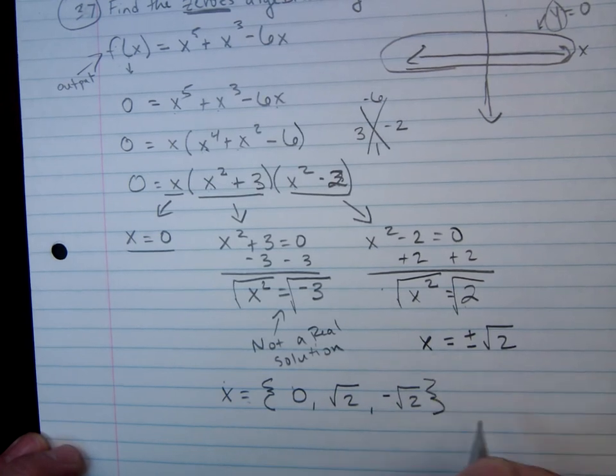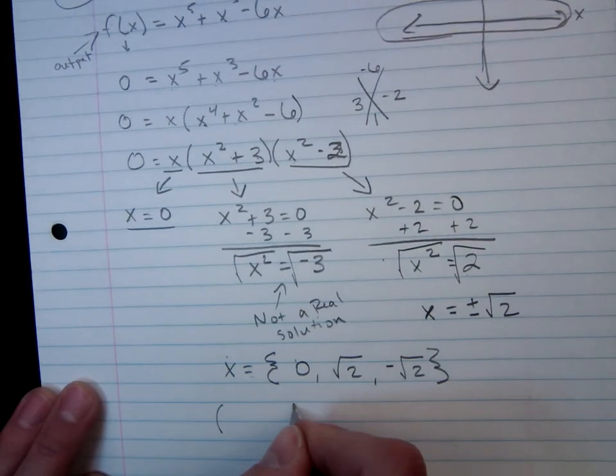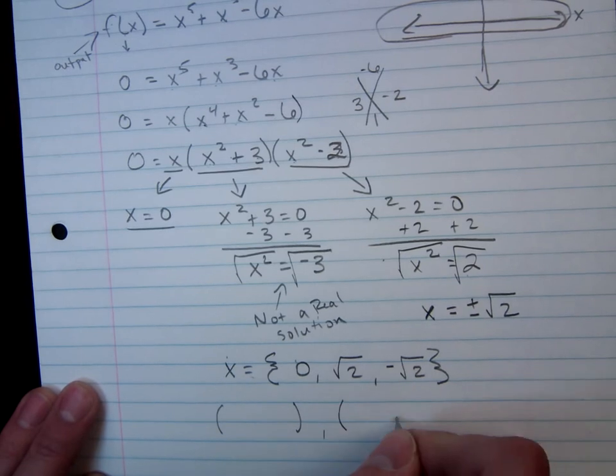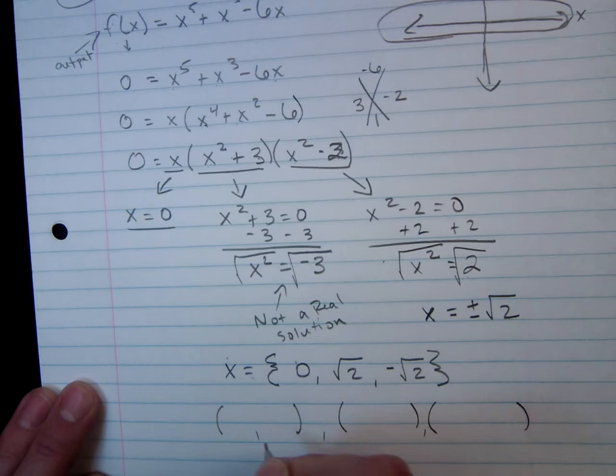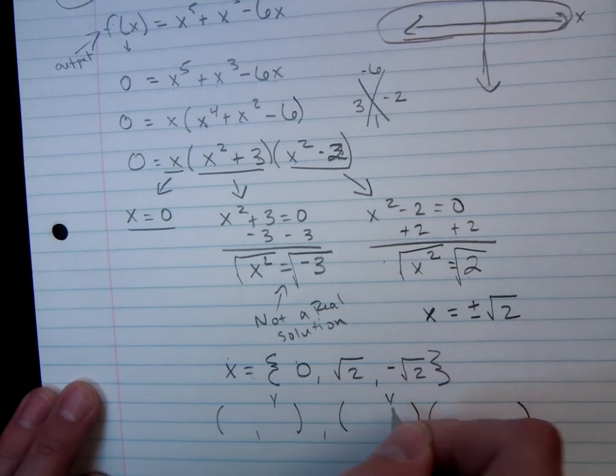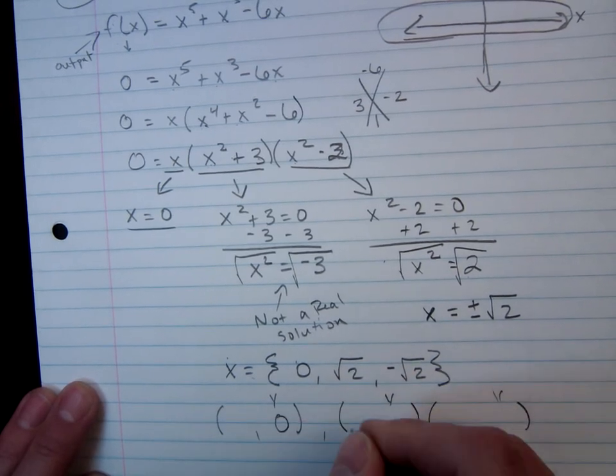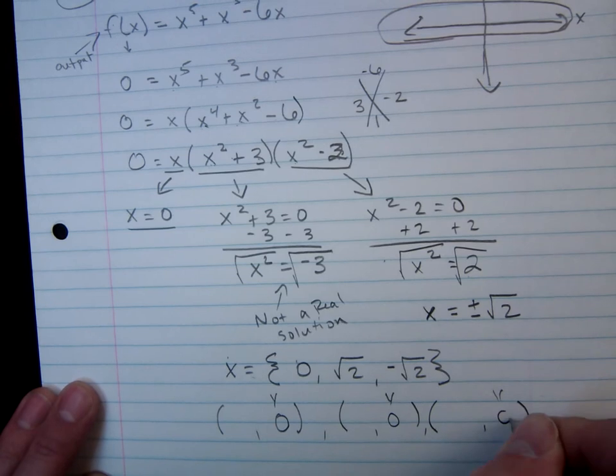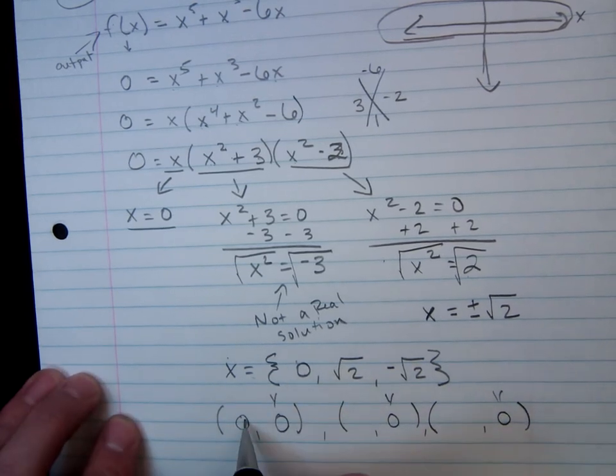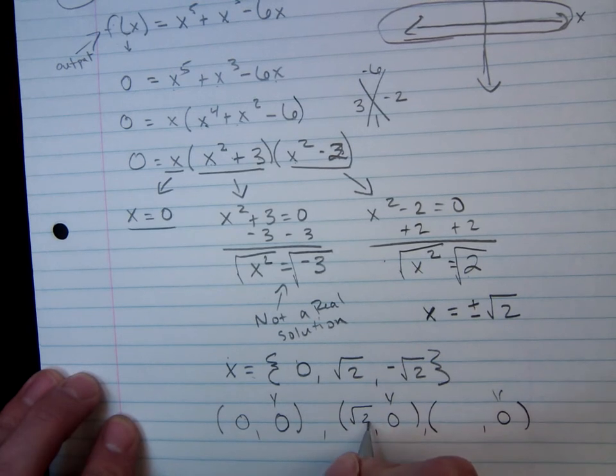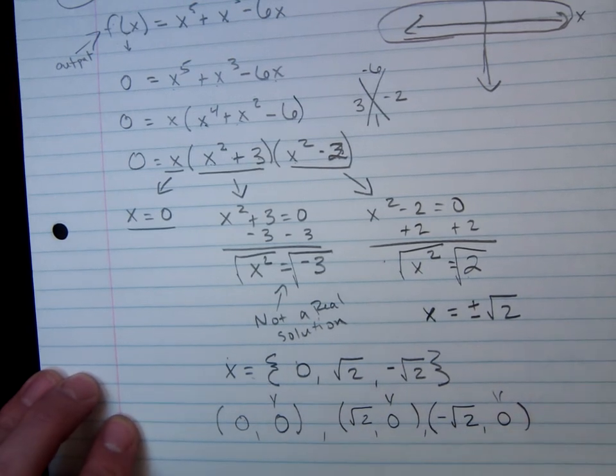And if I wanted to write those as points, I would set up my three points. Keeping in mind that my y term for each one of these will be zero. And then my x for the first one is zero. Here it's square root of 2. And here it's negative square root of 2.